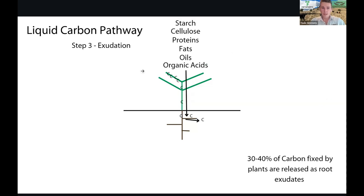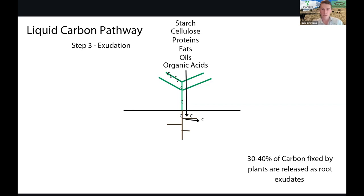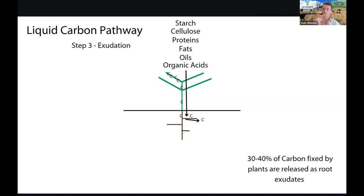The next stage is that a lot of these compounds are going to be exuded out through the roots. It's estimated that 30 to 40% of carbon fixed by plants is actually released as root exudates. So when we follow our carbon, it's going out through our roots into the rhizosphere, which is where all of our microbes hang out.